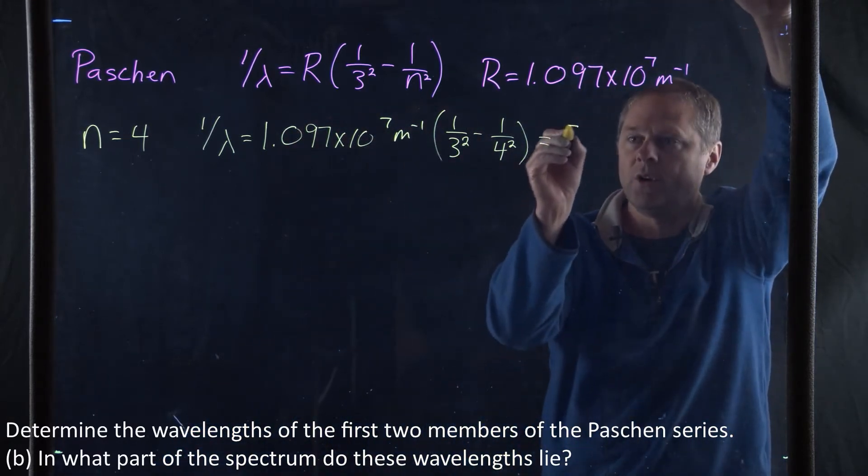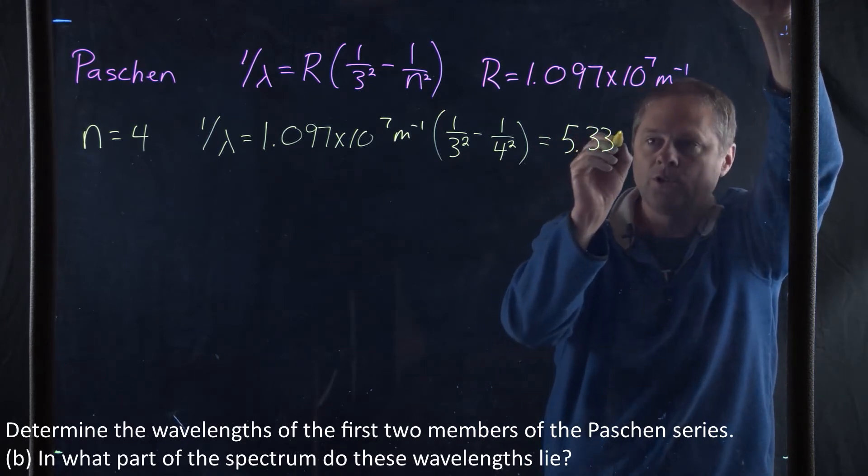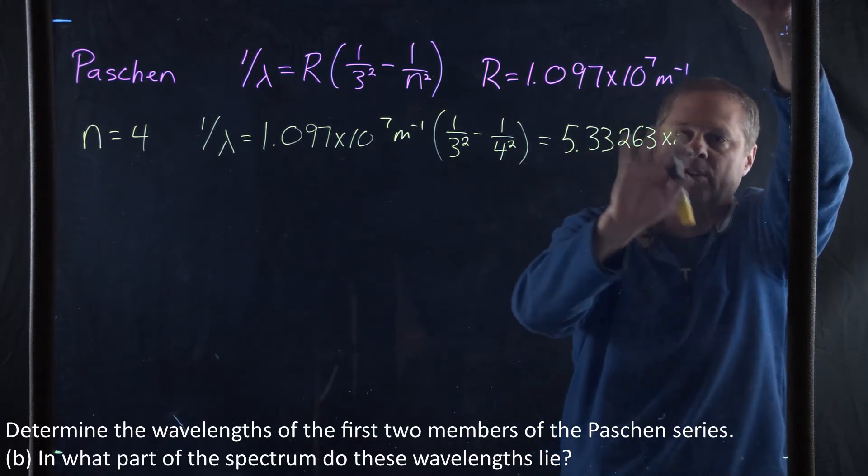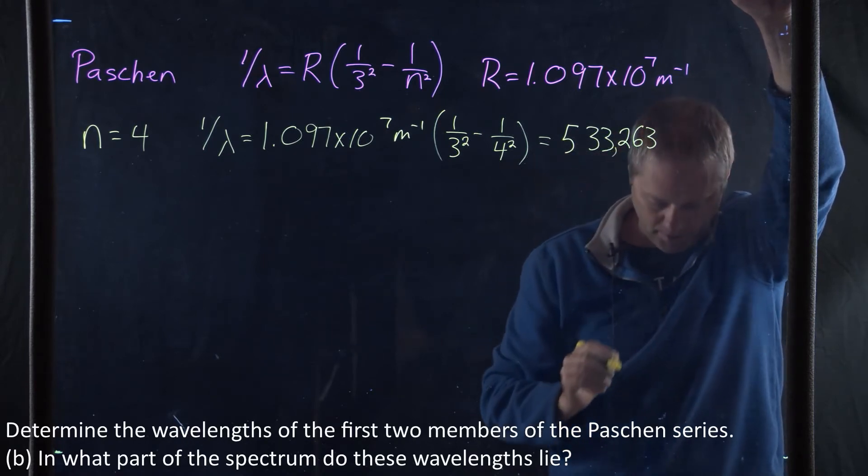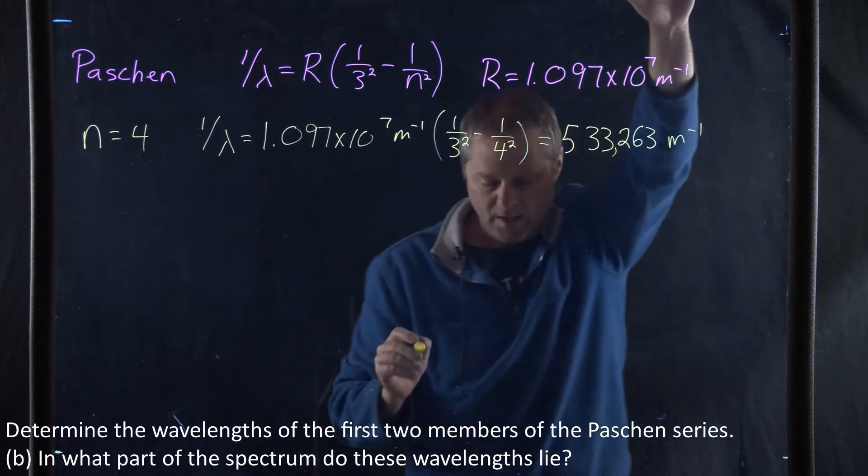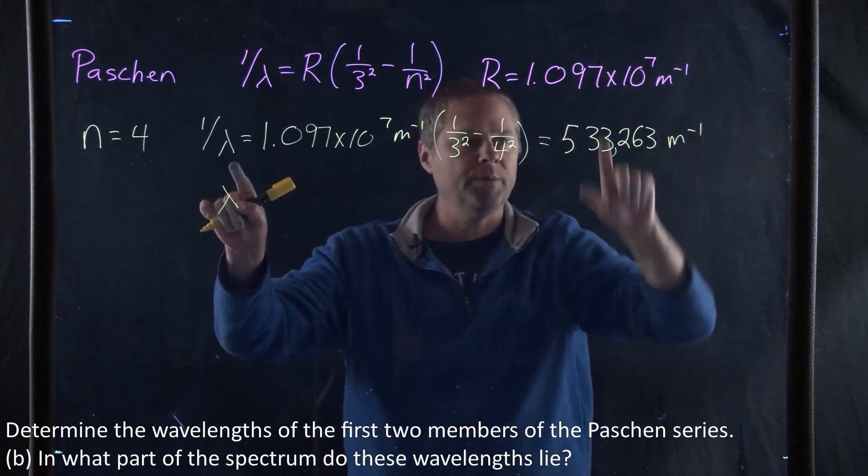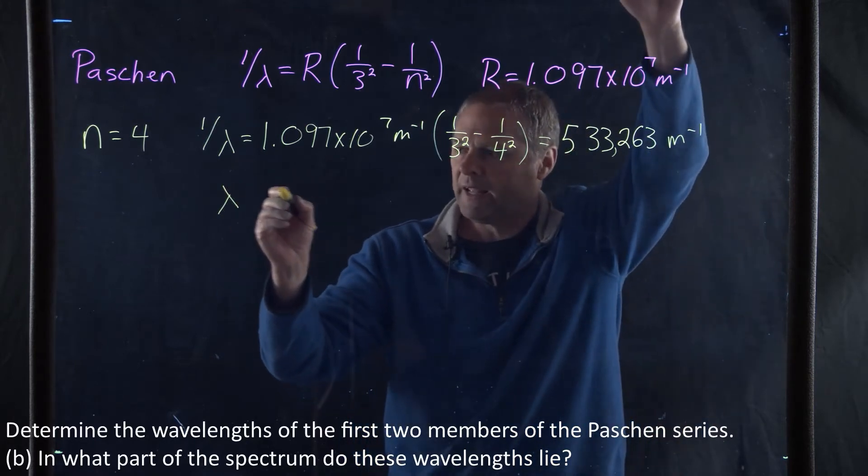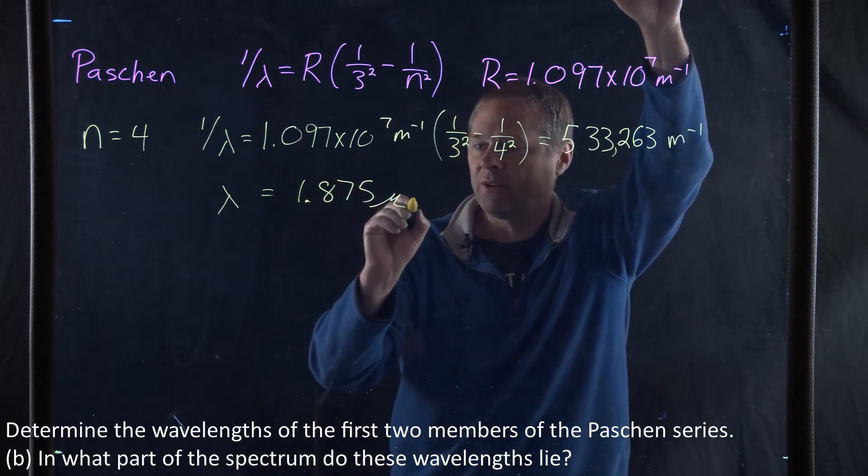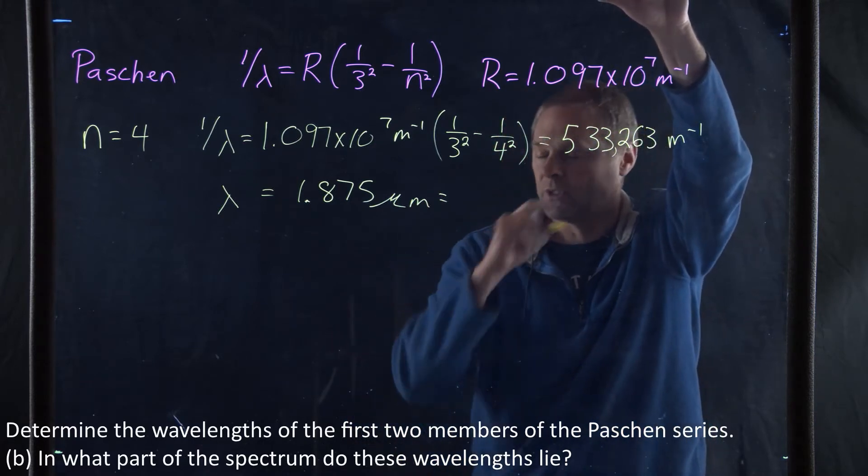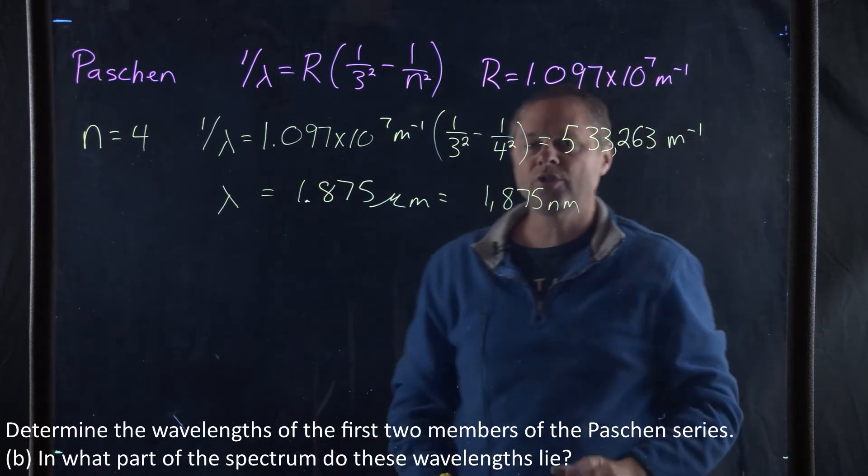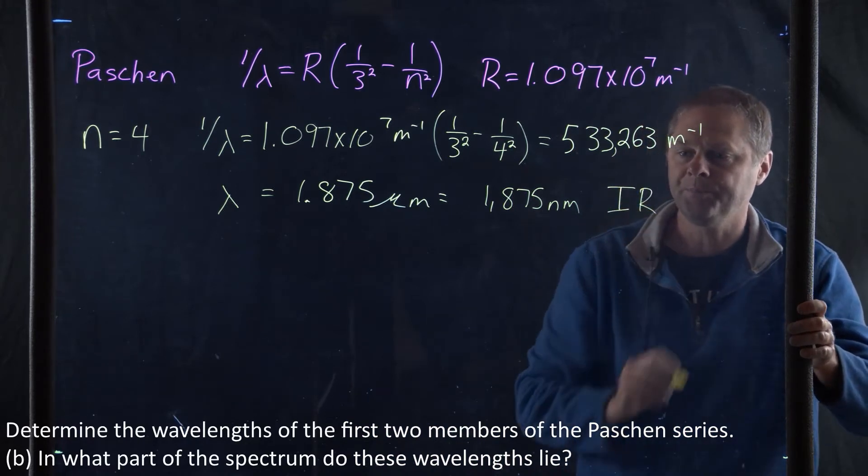That equals 5.33263 inverse meters. Therefore, if we take the inverse, we end up getting 1.875 micrometers, or in terms of nanometers, 1,875 nanometers. The portion of the spectrum for this is going to be the infrared.